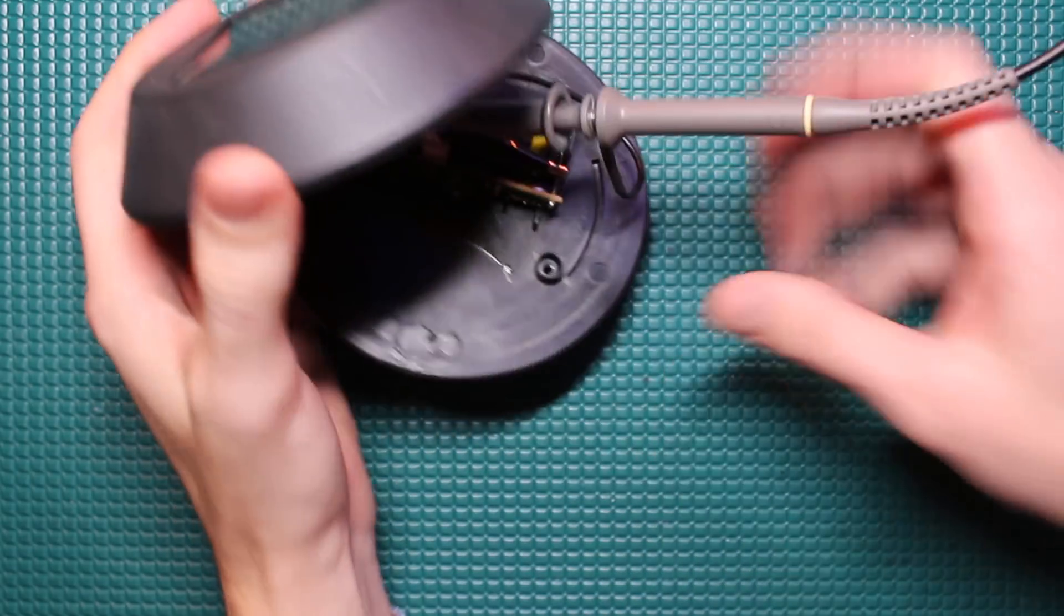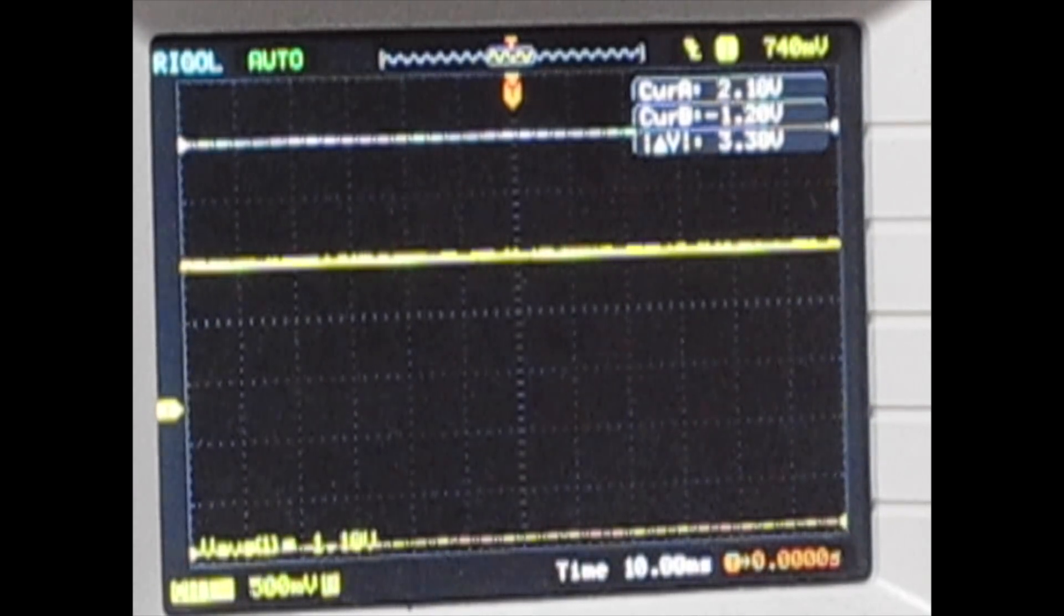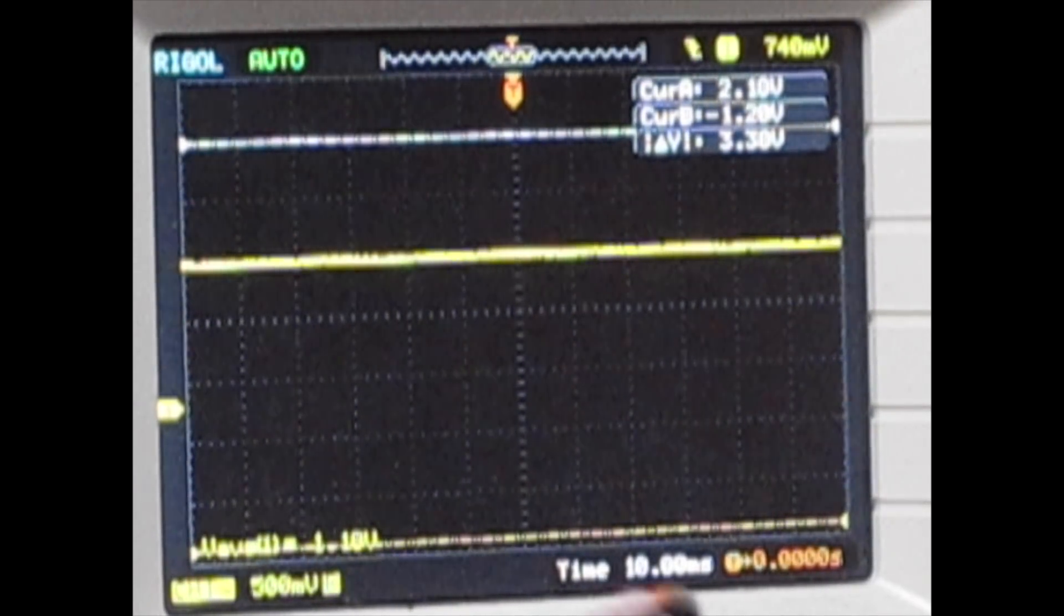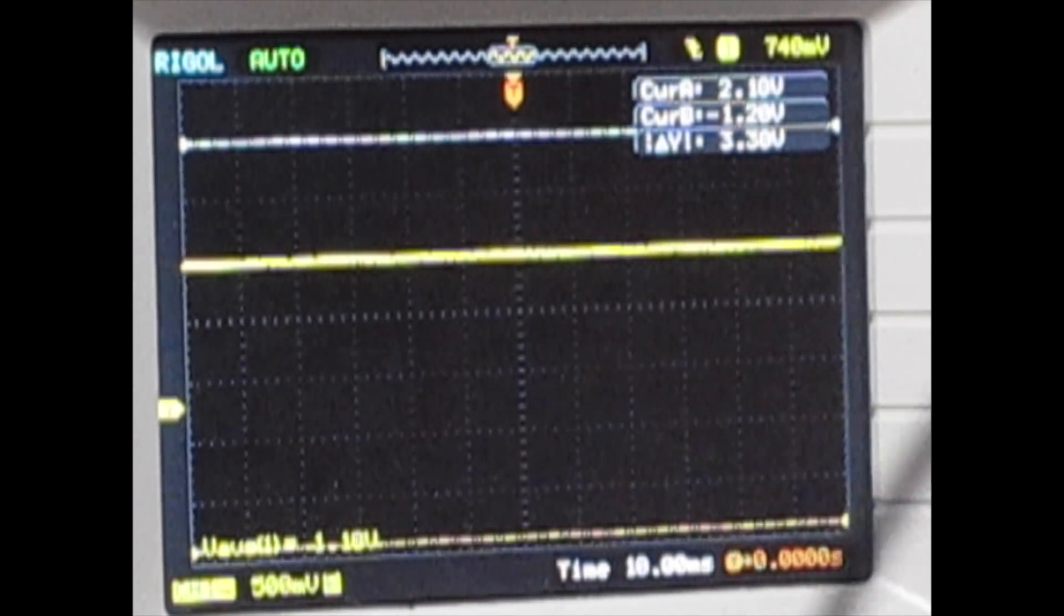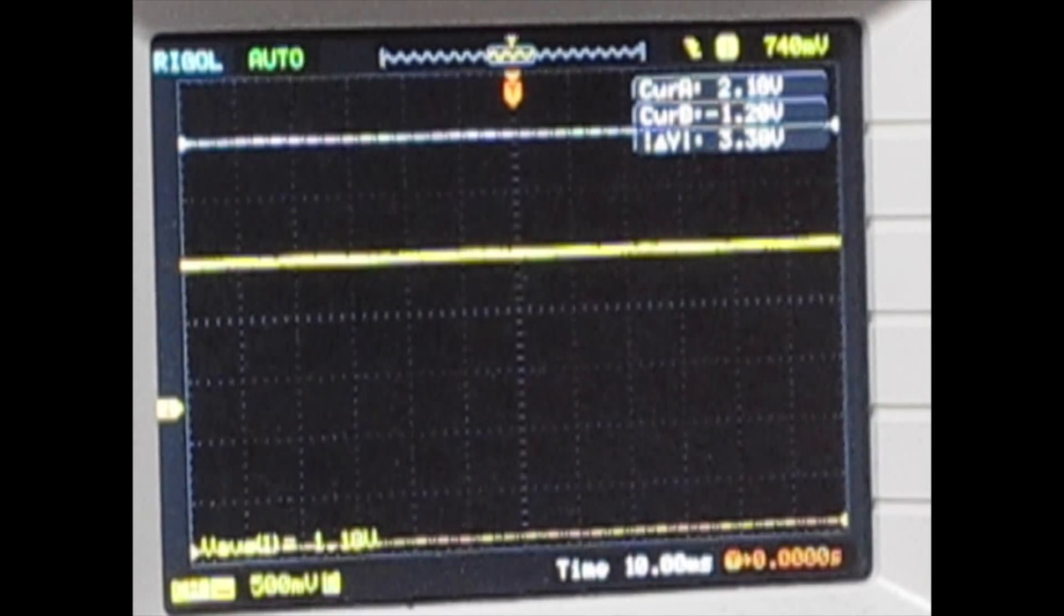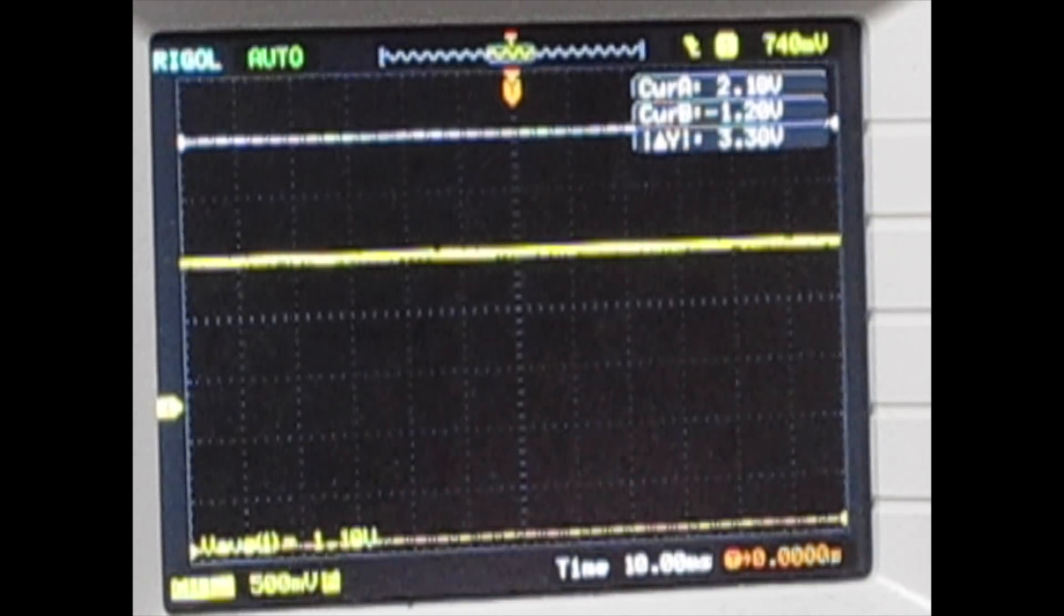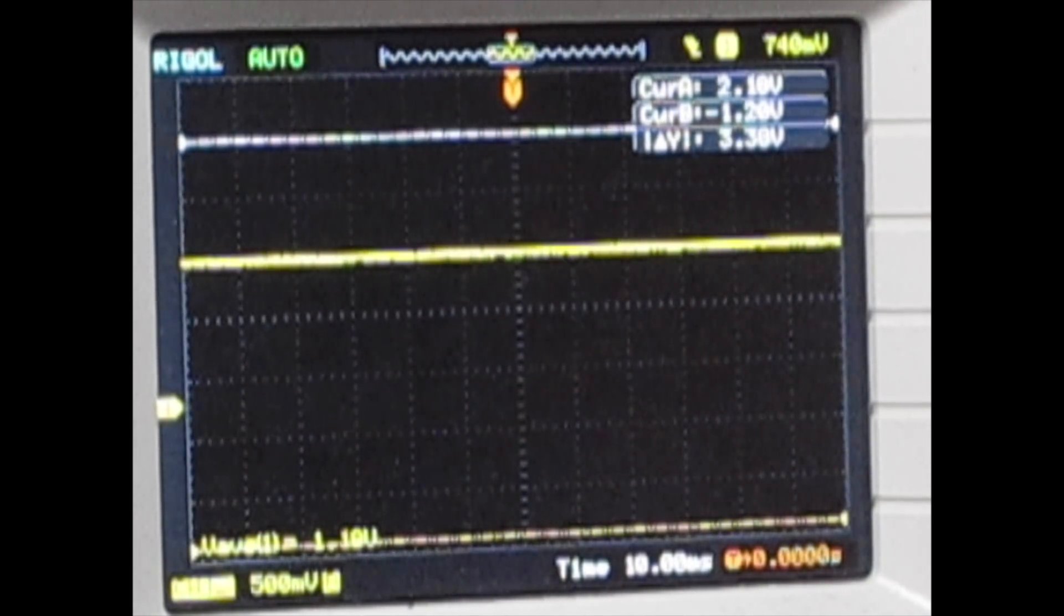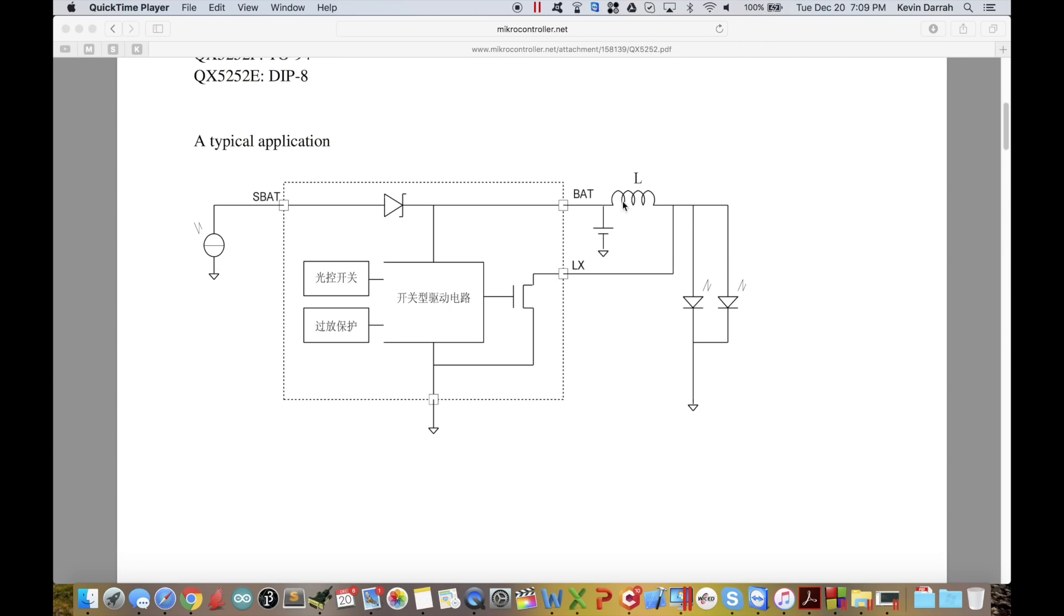With it off - oh did I hook that up wrong? Yeah I did. Okay, that way is negative. There we go. Okay, so by blocking the solar panel we have a little less than a volt there, and then when we hold the solar panel up to the light we can see it's going up to 1.18 volts, which is the actual battery voltage. So it's charging it at 1.2 volts from the solar panel.